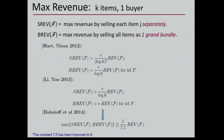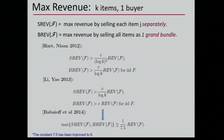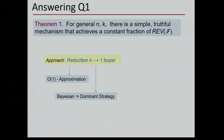The question then is: what about the case when you have N buyers? Is it possible to have a simple algorithm achieving a constant factor of the optimal? That was exactly the question we raised. To answer that first question, we'll prove Theorem 1, which shows that there's a simple and truthful mechanism achieving a constant fraction of revenue. The approach is to reduce the problem to N disjoint one-buyer problems.